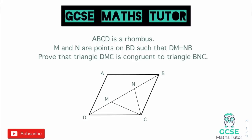Looking at our first question, it says that ABCD is a rhombus. It says that M and N are points on the line BD, such that DM and NB are equal lengths. We want to prove that triangle DMC is congruent to triangle BNC. If we highlight those triangles, DMC is this triangle here, and the other triangle we are looking at is BNC. These are the two triangles we are trying to show are congruent.